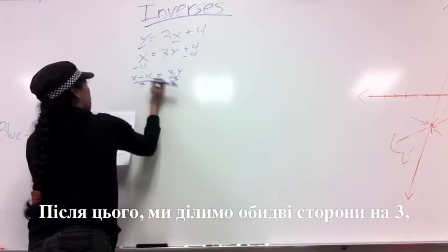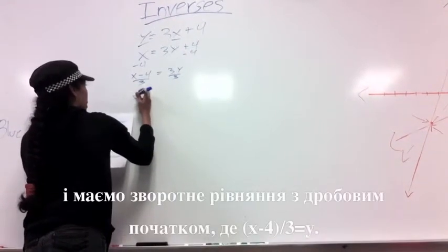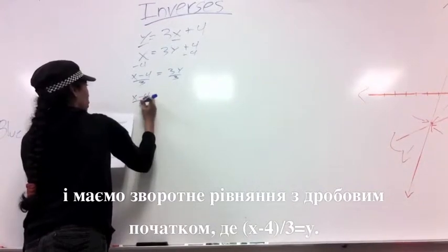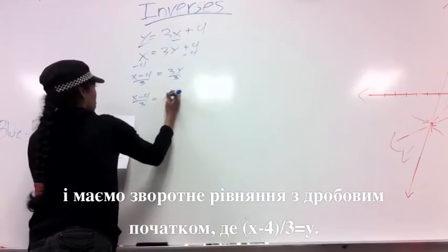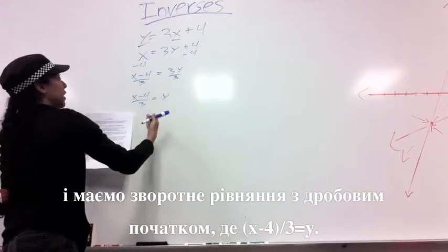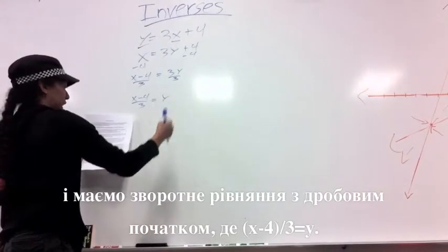And finally, we divide 3 from either side to get x minus 4 over 3 equals y. This is the inverse to y equals 3x plus 4.